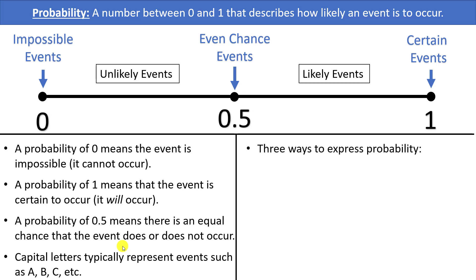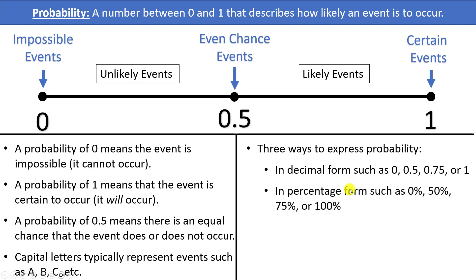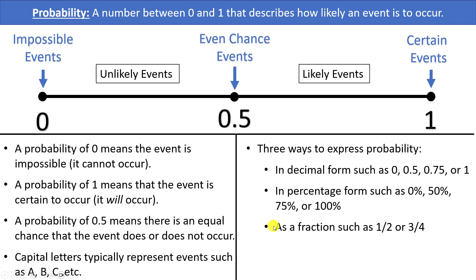There are traditionally three different ways to express a probability. First, you can express it in decimal form, such as 0, 0.5, 0.7, or 1. Second, you can express it as a percentage, such as 0%, 50%, or 100%. Third, you can express it as a fraction — for example, saying an event has a 1/2 or 3/4 chance of happening. In any probability problem, it's acceptable to write your answer in any of these three forms unless a specific form is requested.